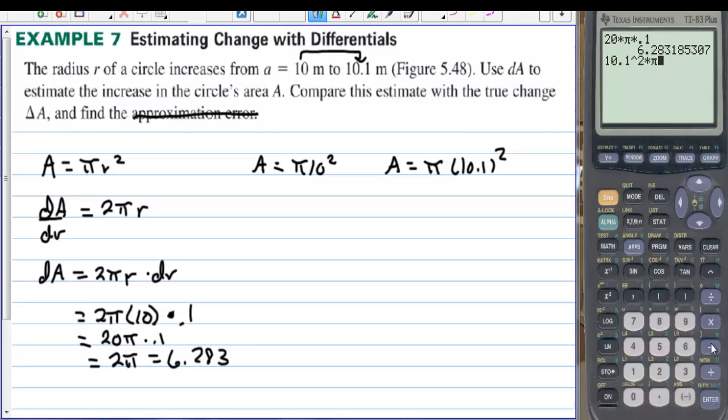And we can subtract pi times 10 squared. And the true change is 6.314. So the change in A is equal to 6.3146. So this is an approximate amount of change. This is the actual change.